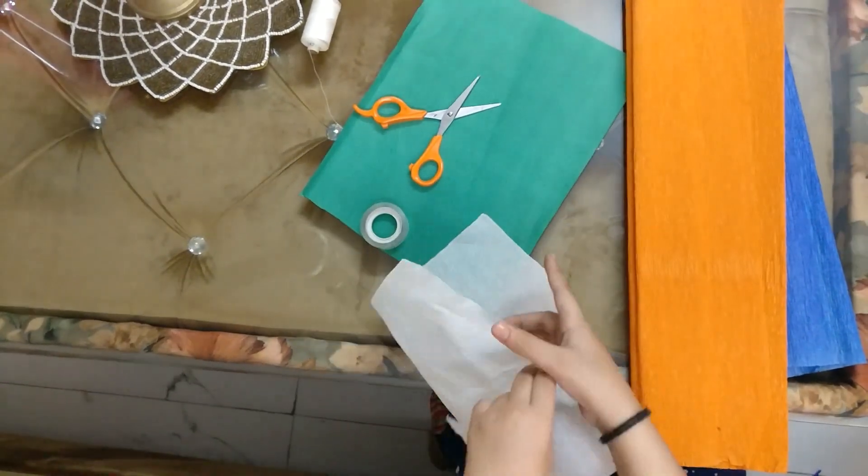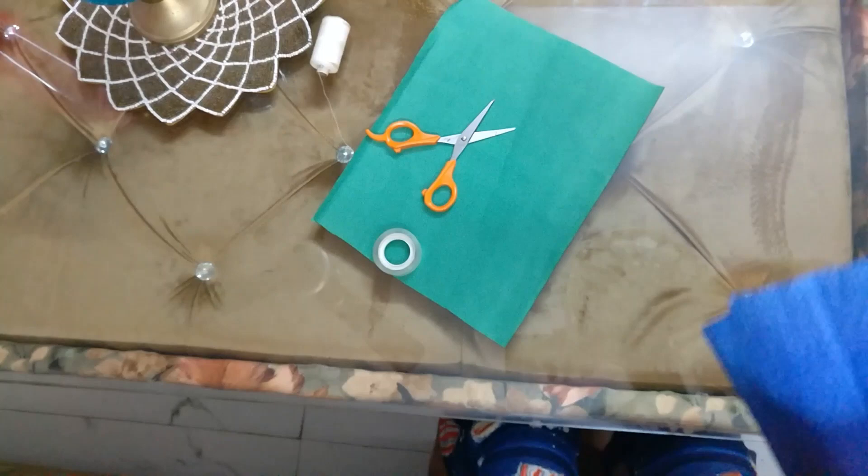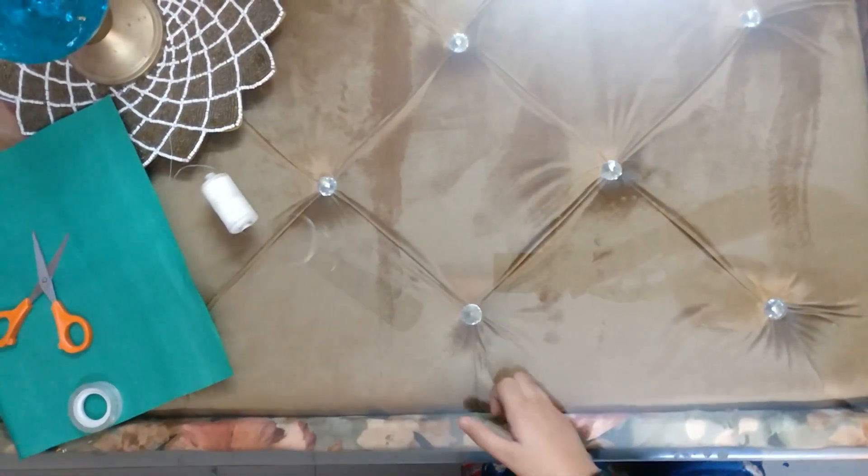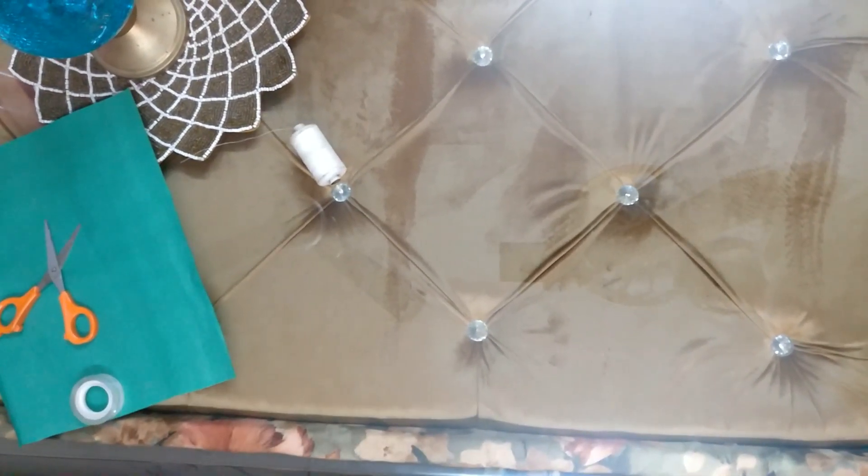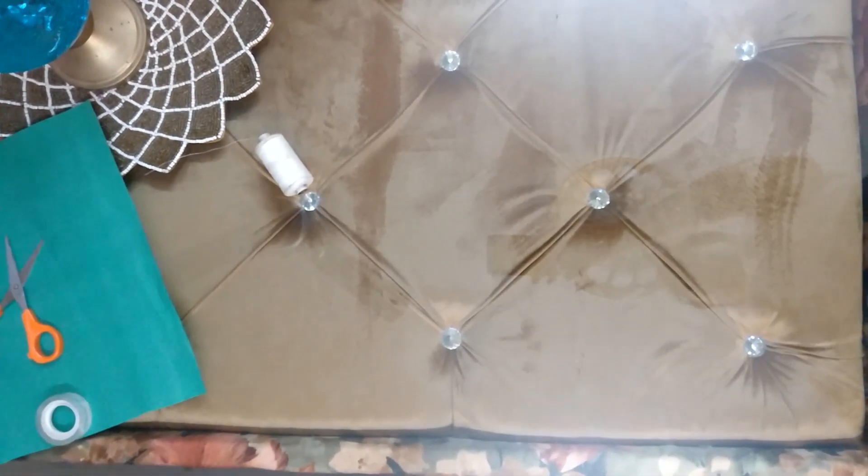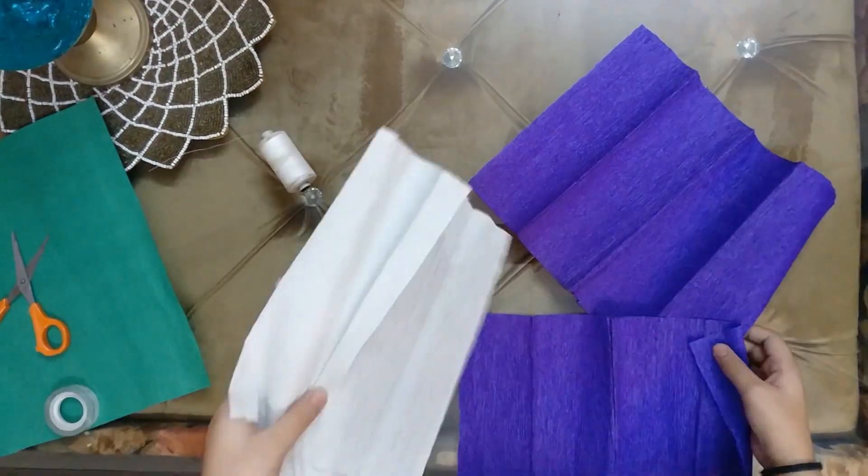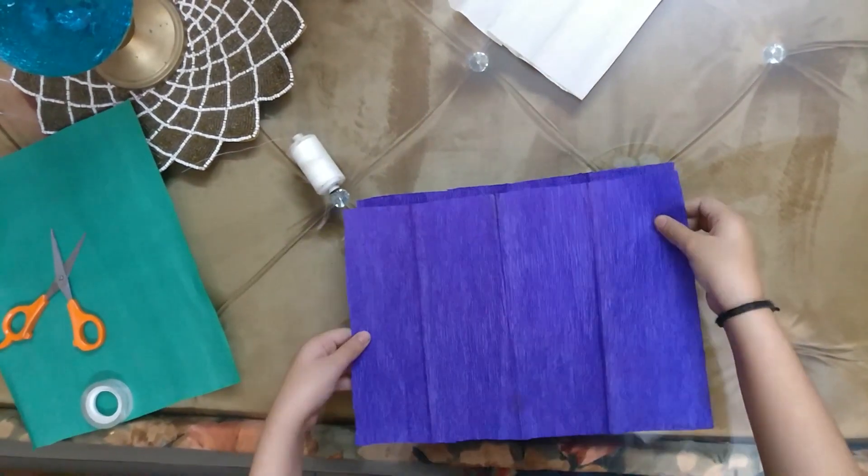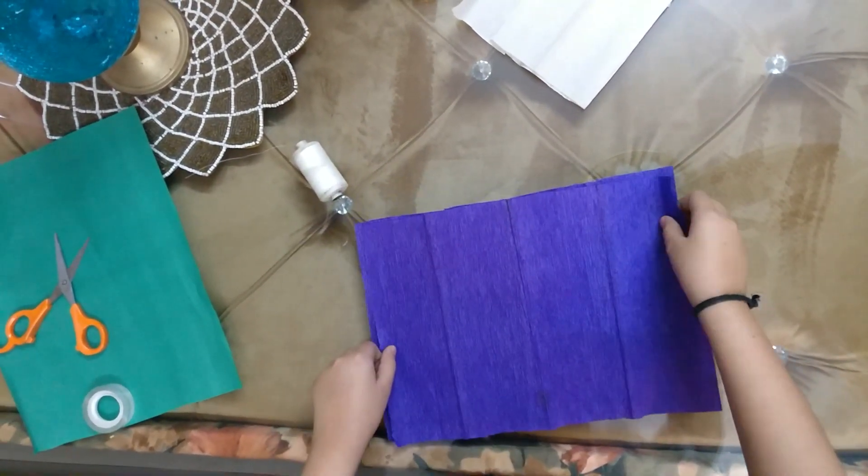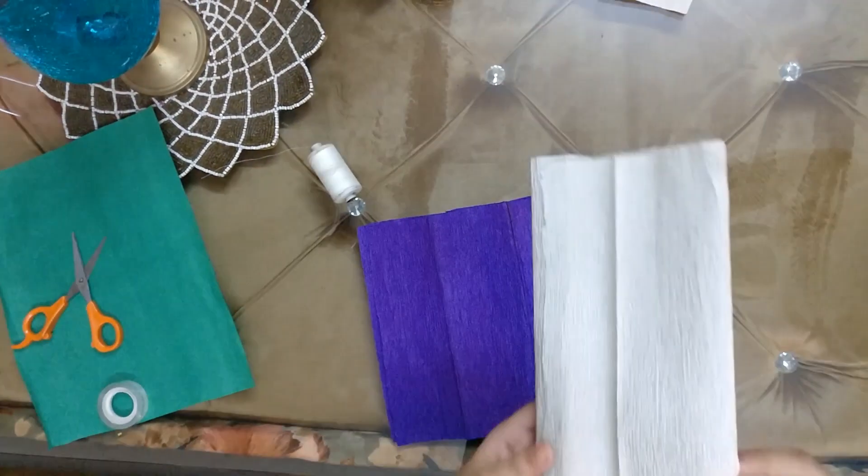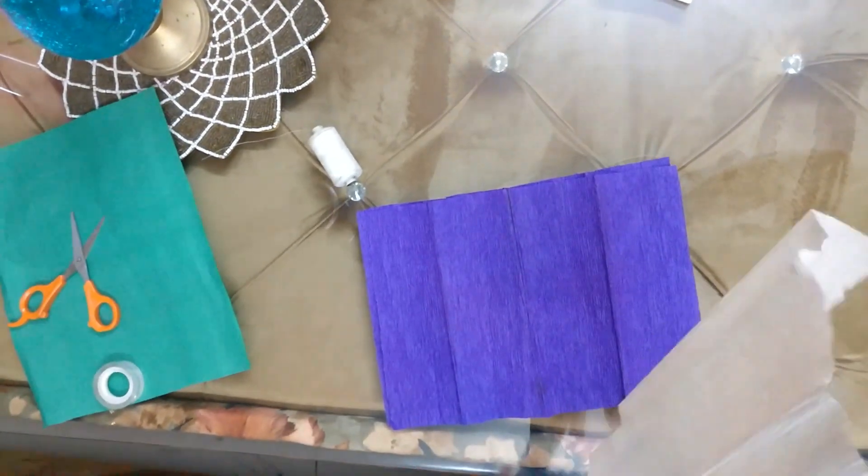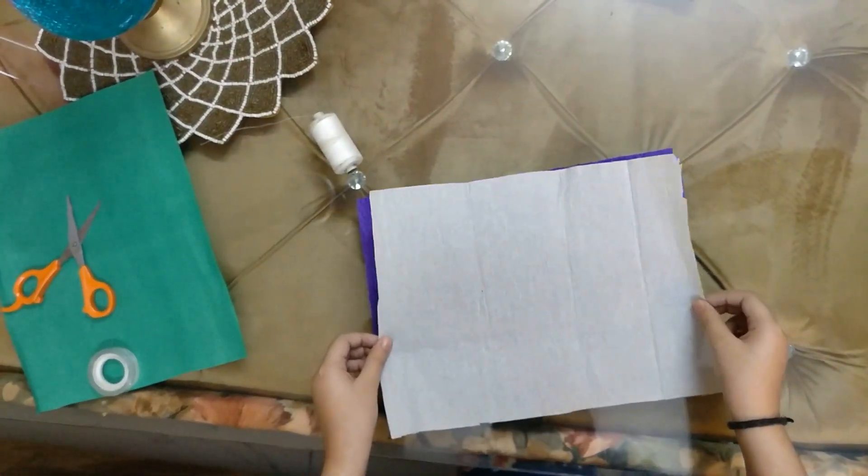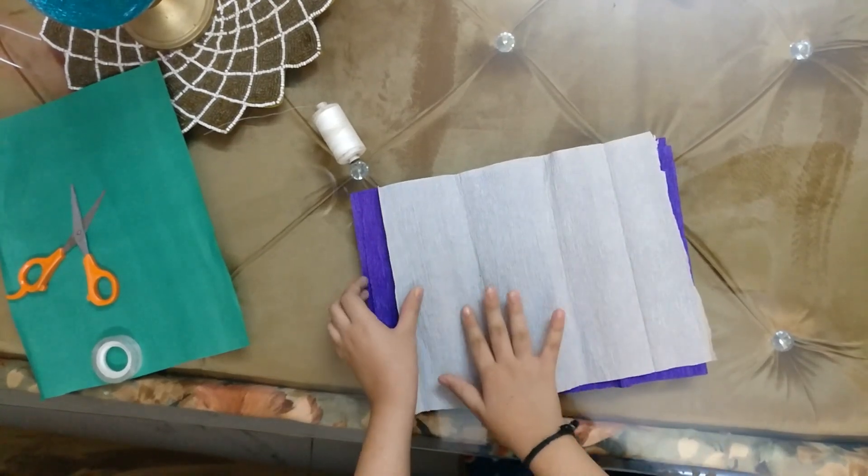So today I'm going to make it with the scrap paper. As you can see, I have 2 purple scrap papers and 2 white. So first I'm going to line them up. So I have lined them with 2 purples. Now I'm going to line the 2 white.